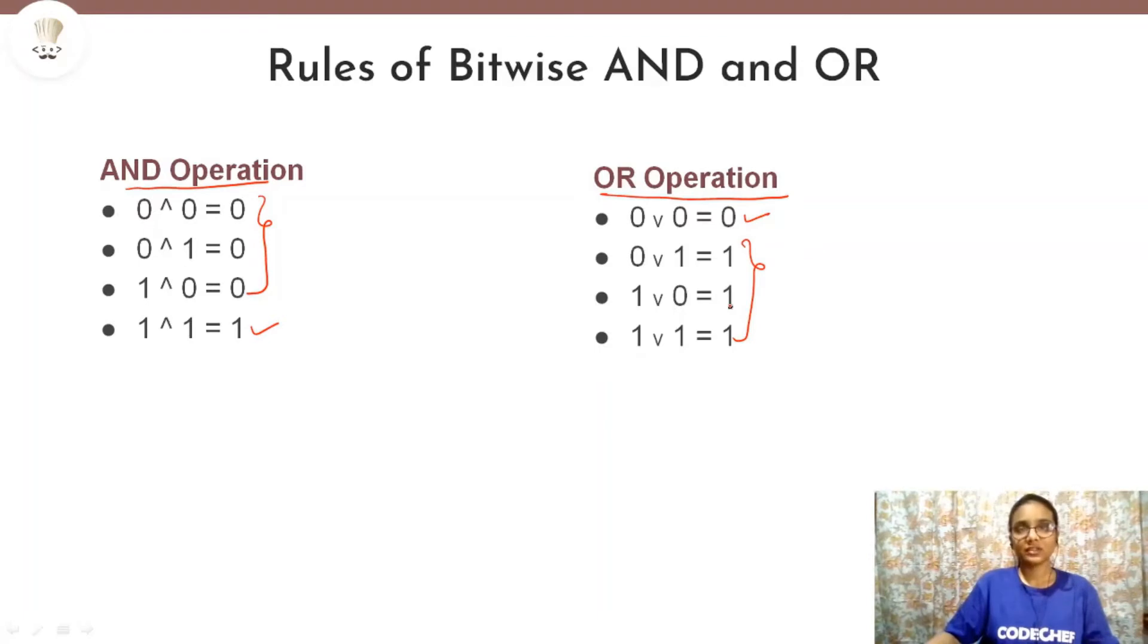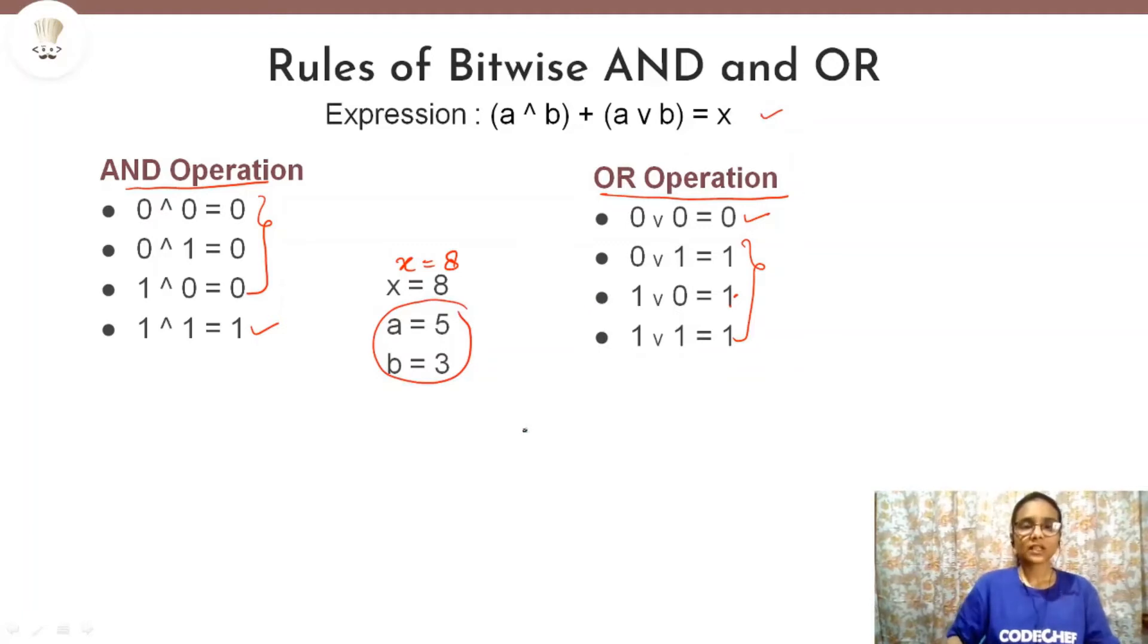So what was our expression? Our expression was that we were supposed to satisfy a AND b plus a OR b equals to x. So let us take a value for x, x equals to 8. Now, we need to find a and b such that it satisfy this expression. So for x equals to 8, we can take a equals to 5 and b equals to 3. And this will satisfy the expression given here. First, we will have to convert a and b that is 5 and 3 to its binary form because we are going to perform the bitwise operations AND and OR. So after converting 5 and 3 to their binary forms, 5 is 101 and 3 in its binary form is 11. And we can add a 0 here since 5 is of 3 digits binary and 3 is only of 2 digits. So we have to make them equal digits.